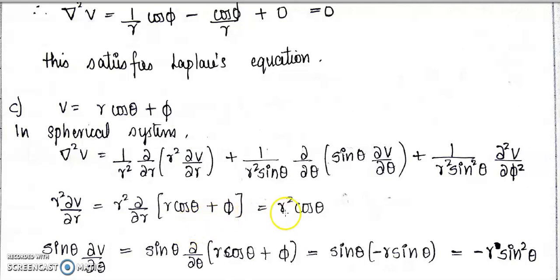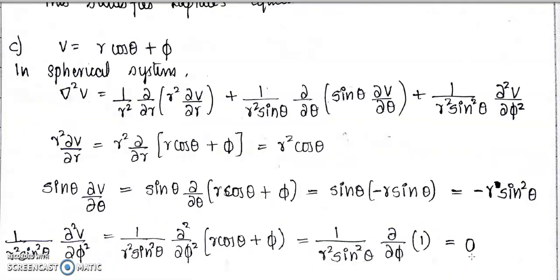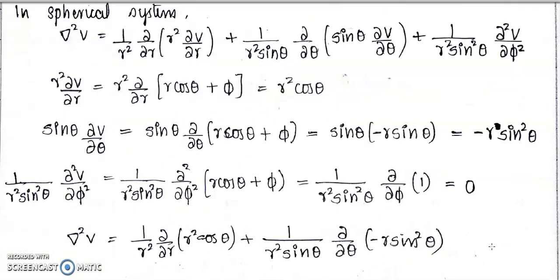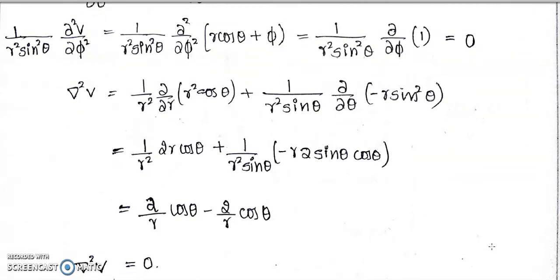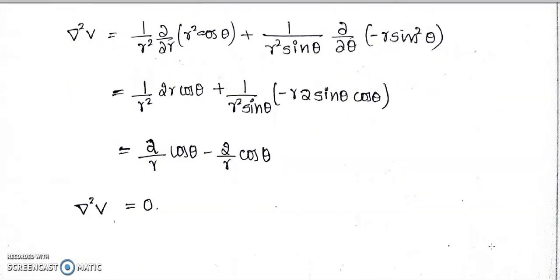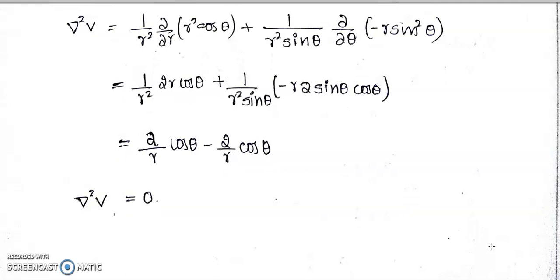Computing: R²·∂V/∂R = R² cosθ; sinθ·∂V/∂θ = −R sin²θ; and (1/R² sin²θ)·∂²V/∂φ² = 0. Taking the total sum, del²V = 0. Therefore, Case 3 also satisfies the Laplace equation in the spherical coordinate system.